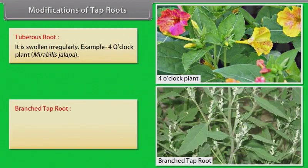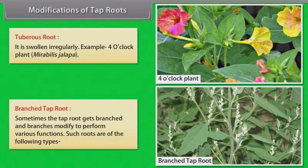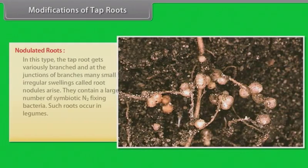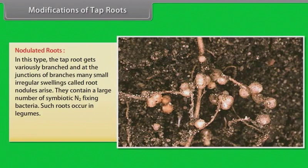Branched tap root: Sometimes the tap root gets branched and branches modify to perform various functions. Nodulated roots: In this type, the tap root gets variously branched and at the junction of branches, many small irregular swellings called root nodules arise. They contain a large number of symbiotic nitrogen-fixing bacteria. Such roots occur in legumes. Example: Rhizobium leguminosarum.